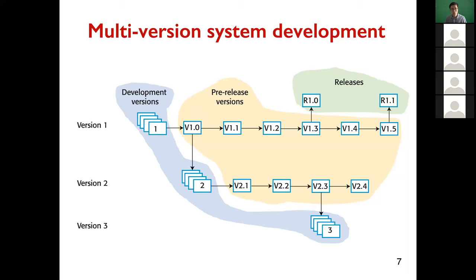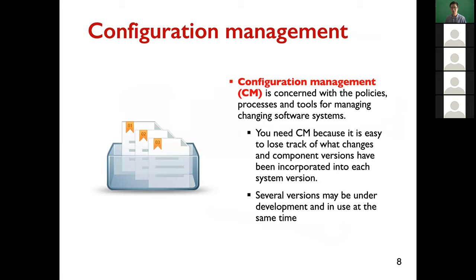Similarly, for version 2 we can have pre-release versions and also release versions. It's a tree-based model with multiple versions during active development. We can also see that during the development of version 3, there can still be active development of version 1. This is why we need configuration management.